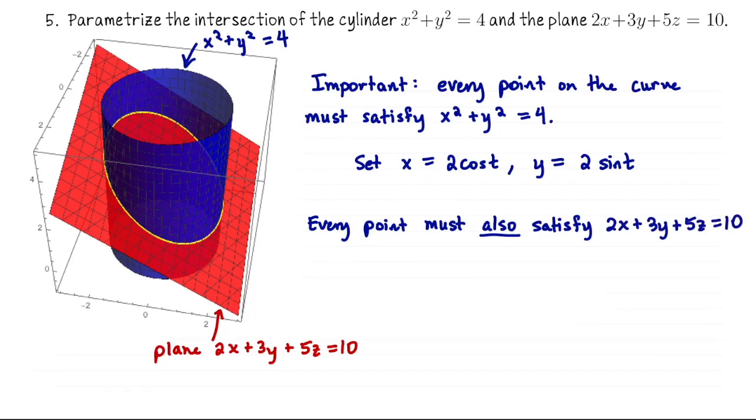We have a good description for x and y already. All we're really missing here is z, but notice we can isolate z in this equation. So let's say 5z is 10 minus 2x minus 3y. In other words, z is 2 minus 2 fifths, and then instead of x I'm going to write 2 cosine of t minus 3 fifths, and instead of y I'm going to sub in 2 sine t.